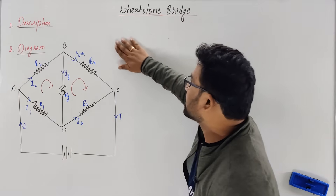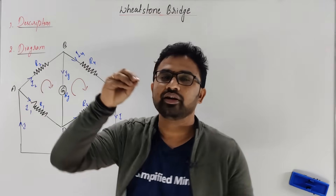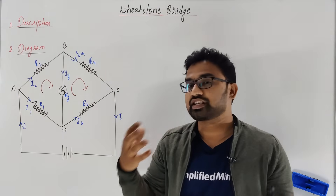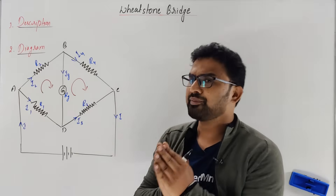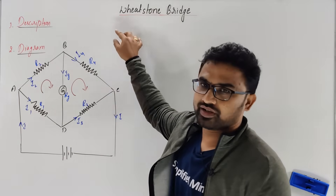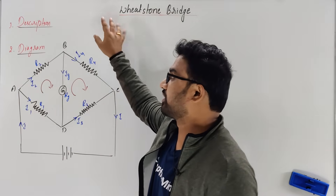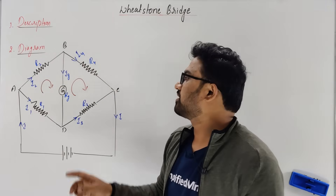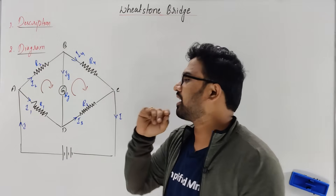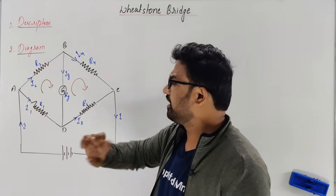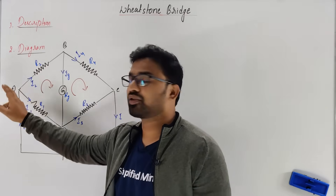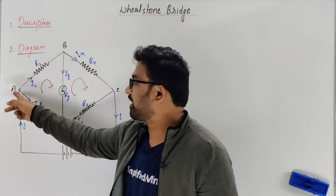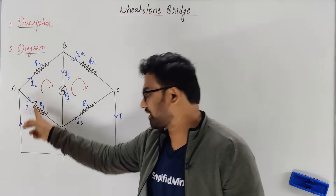In the description for the board exam, you have to write the description properly — it's very important. You have to always explain the diagram. So: consider four resistors connected as shown in the figure — R1, R2, R3, R4 as shown. The two batteries are connected across any two diagonally opposite points.